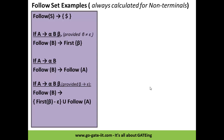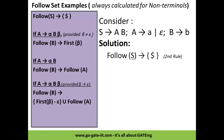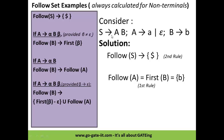Now for the follow set calculation — remember this is always calculated for non-terminals. Follow of S, being the starting symbol, is always dollar. Then follow of A: we locate A in the given grammar. Follow of A is nothing but first of B. Since B doesn't give epsilon, first of B equals follow of A, which is 'b'. Then follow of B is nothing but follow of S, which is dollar.